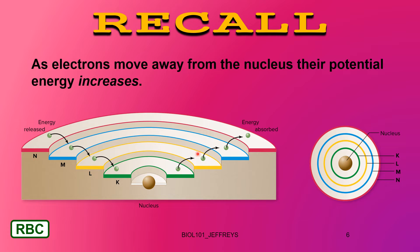Recall this illustration: as electrons move away from the nucleus — here's the nucleus of an atom — as electrons move from one energy shell to the next, away from the nucleus, their potential energy increases. So an electron way out in the outer shell can potentially do a lot of work. There's a lot of power stored in that electron, and it can interact with the electrons of an adjacent atom and form a molecule. By the same token, the reverse is true: as electrons move from an energy shell down closer to the nucleus, the potential energy of that electron decreases.